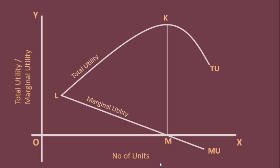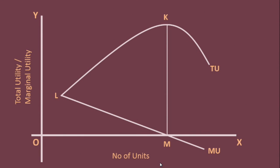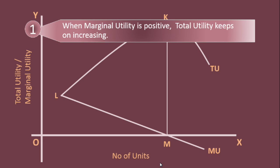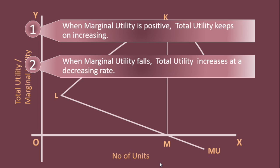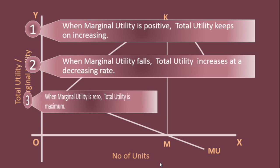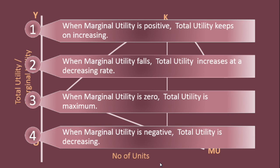By way of conclusion, let us recollect all four relations: 1. When marginal utility is positive, total utility keeps on increasing. 2. When marginal utility falls, total utility increases at a decreasing rate. 3. When marginal utility is zero, total utility is maximum. 4. When marginal utility is negative, total utility is decreasing.